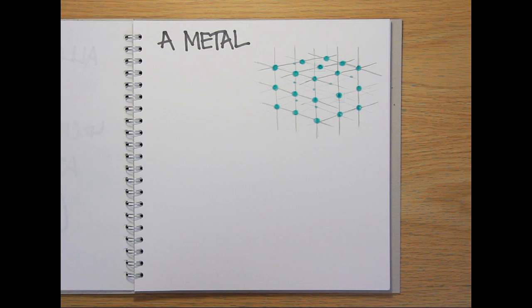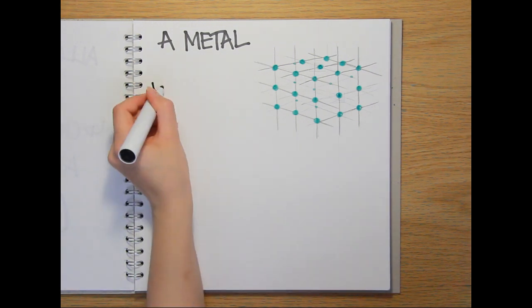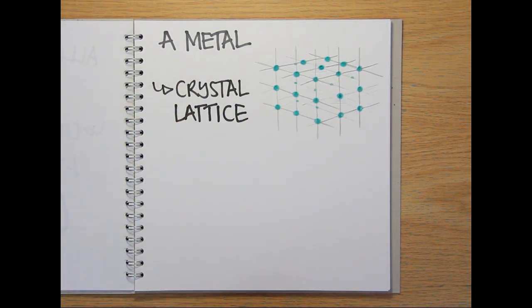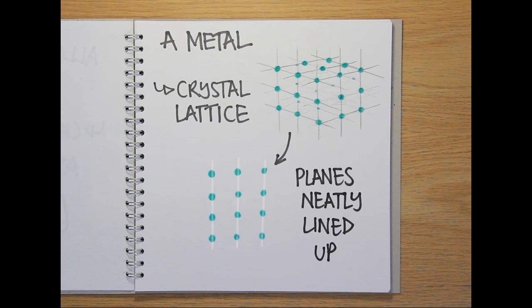First of all, this is the molecular structure of a metal. It forms a regular crystal lattice with planes of atoms all lined up neatly. You can also see similar crystal structures in grains of salt and in gemstones like quartz.